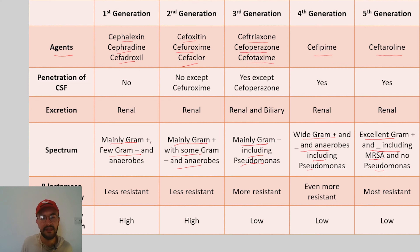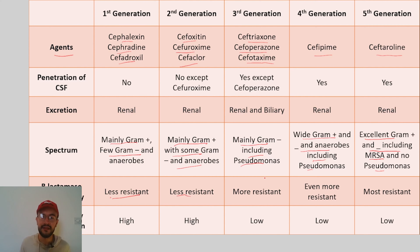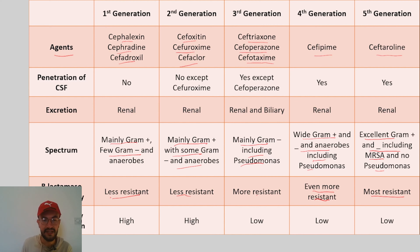Regarding beta-lactamase susceptibility, resistance increases progressively across generations — the first generation has the least resistance, then second, third, fourth, and the fifth generation is the most resistant. Regarding cross-allergy with penicillin, the first and second generations have high cross-allergy, while the third, fourth, and fifth generations have low cross-allergy because of their complex structure. And with that we reach the end of this video — thank you for watching and see you in the next video.